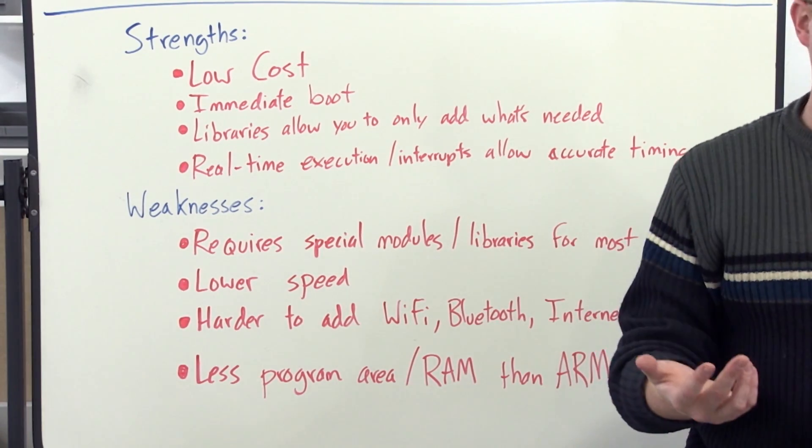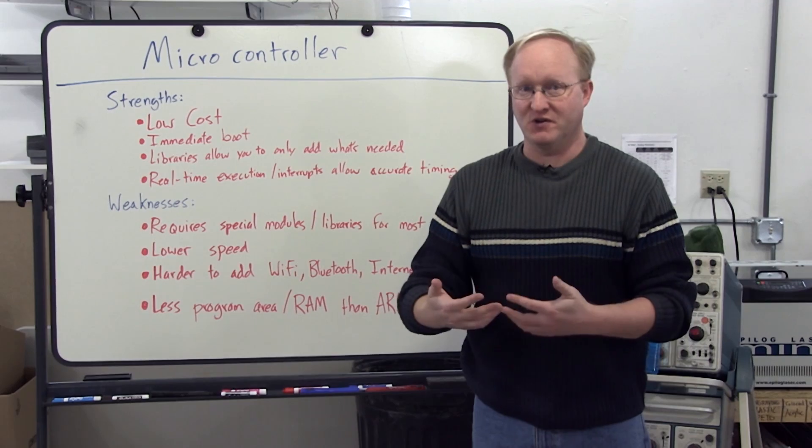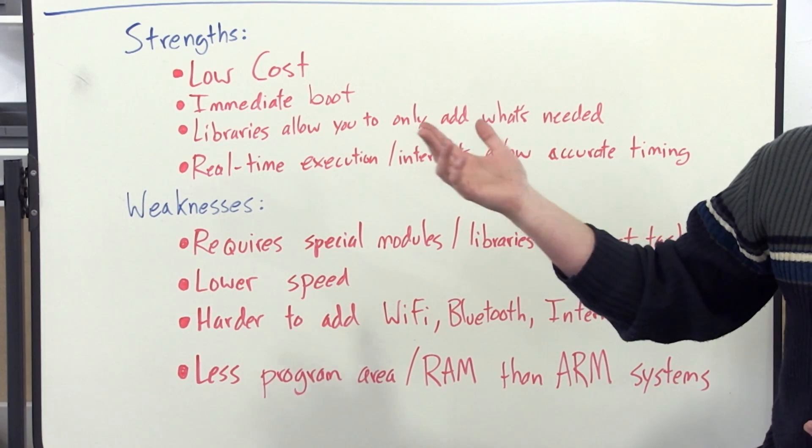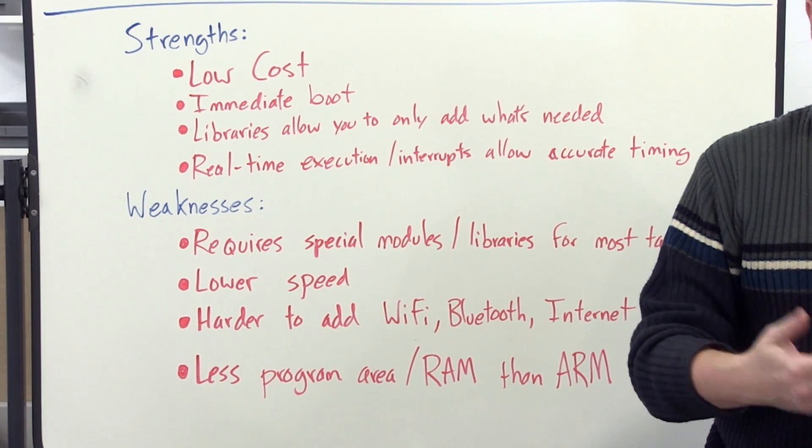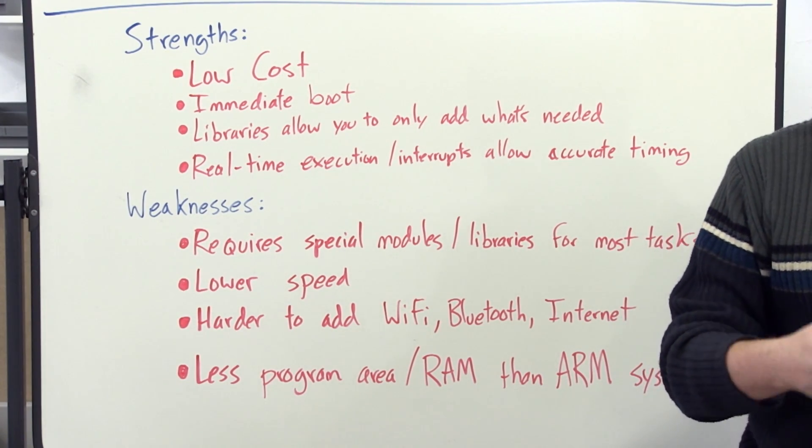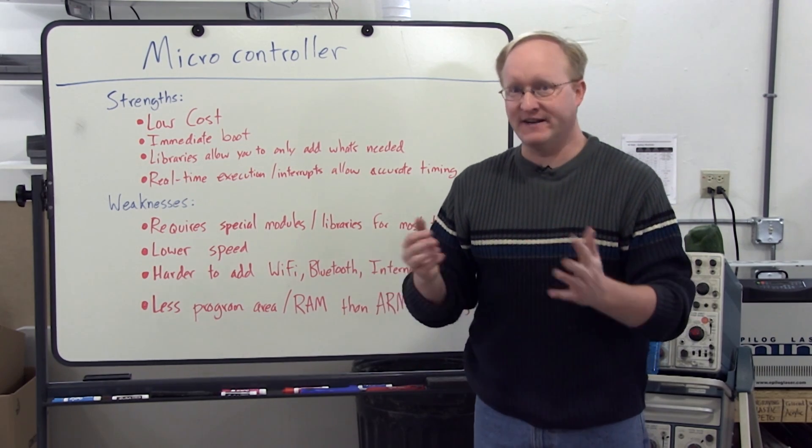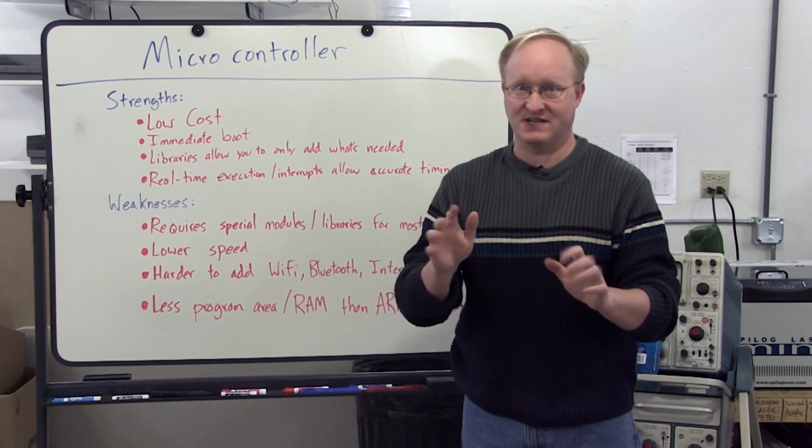And there's real-time execution of code and interrupts that allow accurate timing. On a Raspberry Pi, for instance, you've got a Linux kernel going, so you don't exactly know when things are executing. With a microcontroller, you can use low-level code and interrupts and know exactly when something is happening. So if you need something to happen 1,000 times a second, you can create an interrupt, and that code will happen 1,000 times a second.